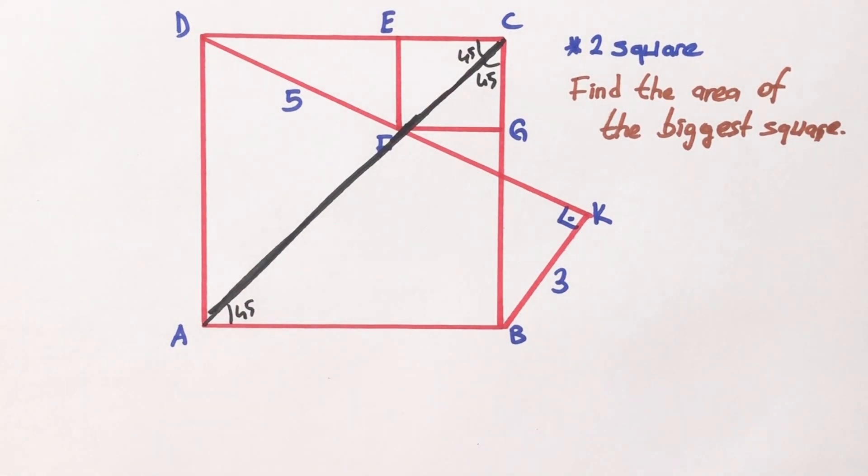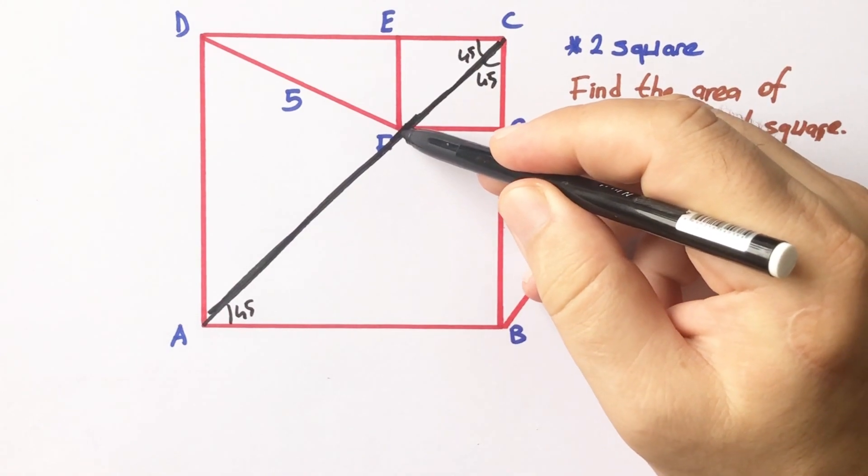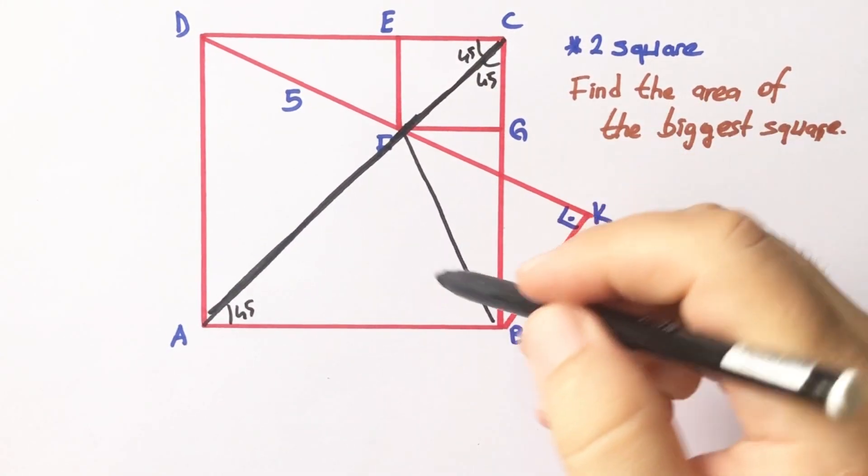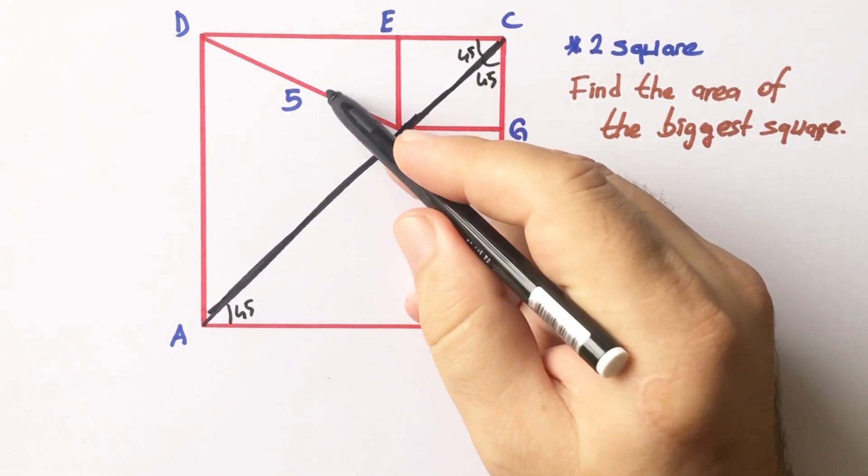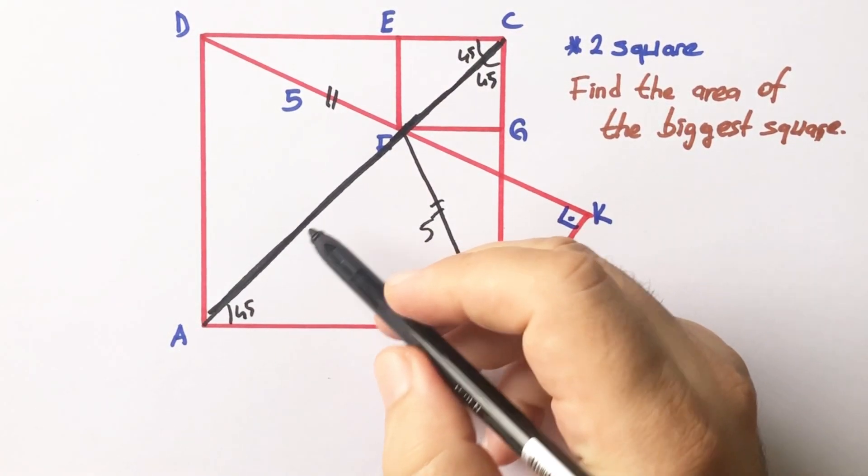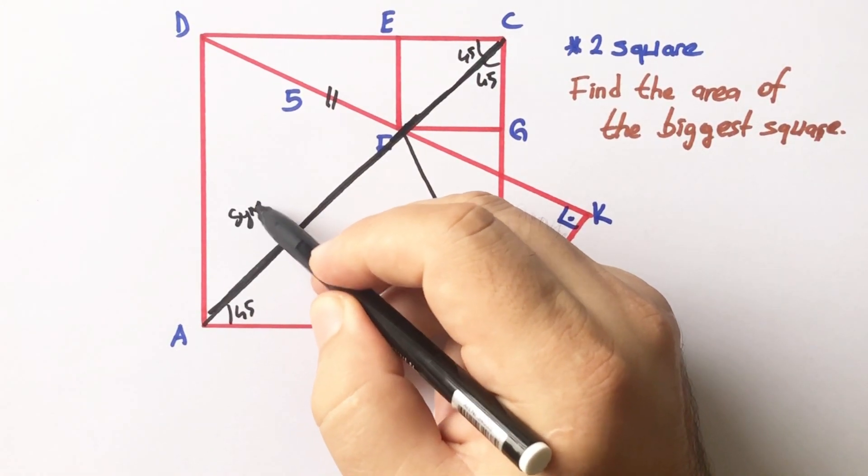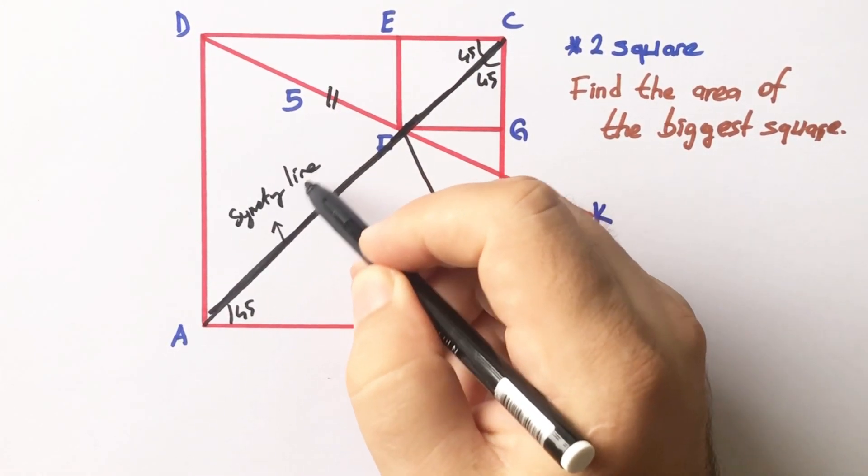And here is also 45 degrees. And then if we connect this point, corner of the square like this, these two lengths must be equal because of symmetry line.